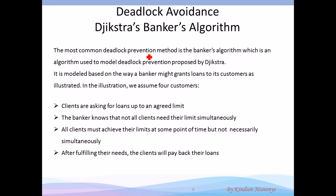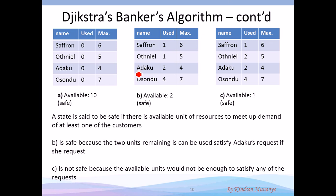We also have deadlock avoidance using the Banker's algorithm. There are customers asking for loans from the bank and each can get up to a certain maximum. We have four customers: Saffron, Othniel, Adaco, and Osando. The maximum resource that can be given to Saffron is six; to Othniel, five; to Adaco, four; and to Osando, seven. Currently they have not asked for anything, so their allocated amounts are zero — the state is safe.